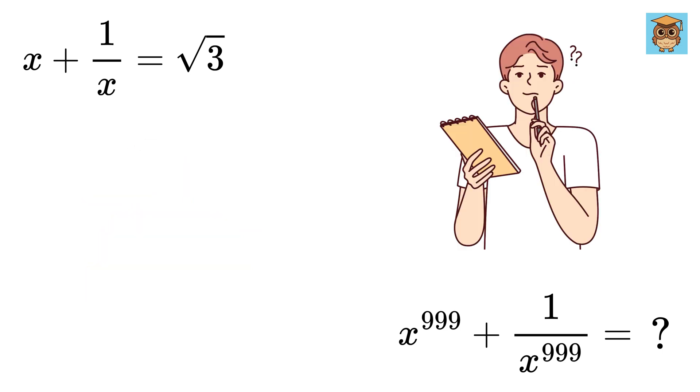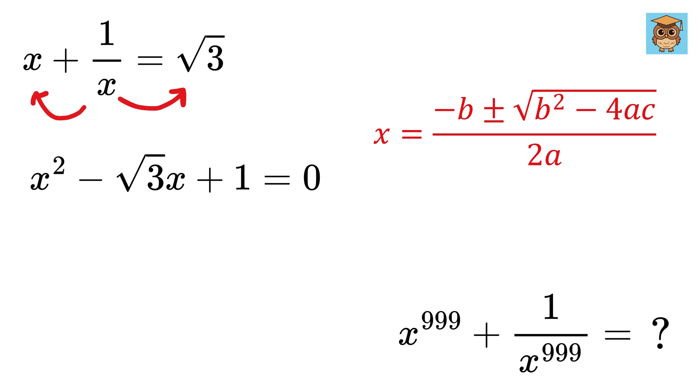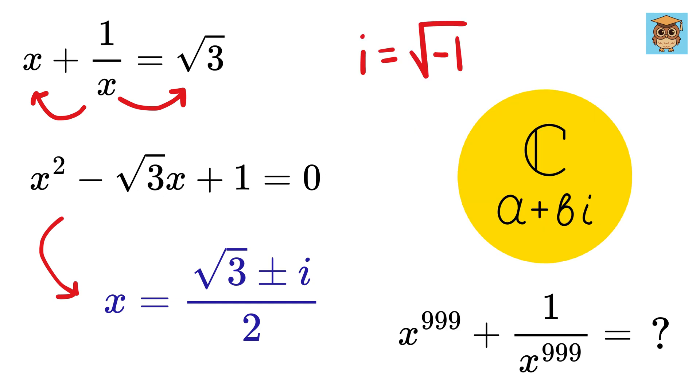First thing that comes to our mind is to multiply both sides by x and convert this equation into a quadratic one, then solve for x using our favorite quadratic formula. The value of x is not even real. It turns out to be complex.